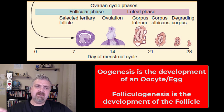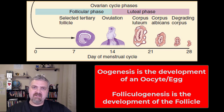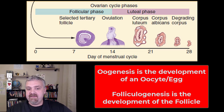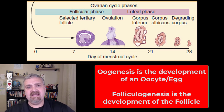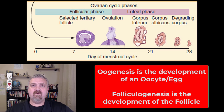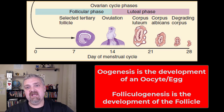A couple of terms: oogenesis would be the production, the genesis of a functional egg, and then you have folliculogenesis — the development of the follicles. These two things are going to be happening in concert. So that is a quick overview of the ovaries. We will look at those pathways in more detail in a little bit. I hope this helps. Have a wonderful day. Be blessed.